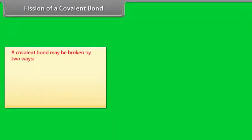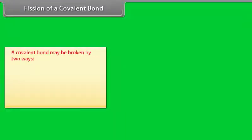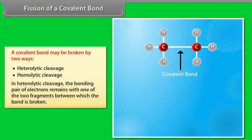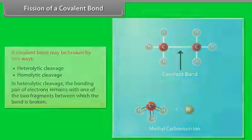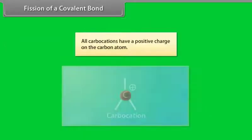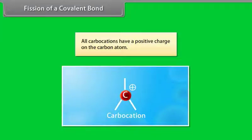Fission of a covalent bond — a covalent bond may be broken by two ways: heterolytic cleavage and homolytic cleavage. In heterolytic cleavage, the bonding pair of electrons remains with one of the two fragments between which the bond is broken. For example, all carbocations have a positive charge on the carbon atom.